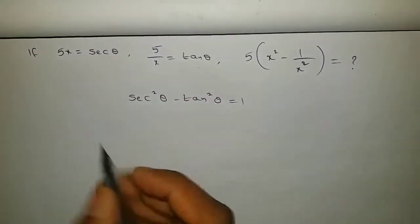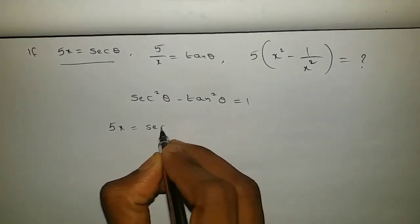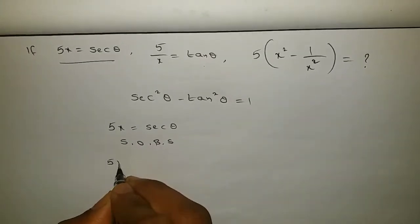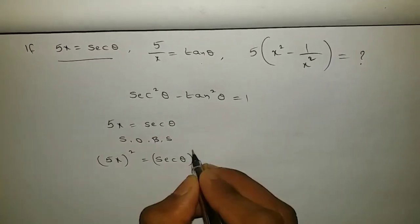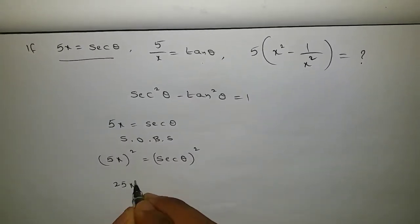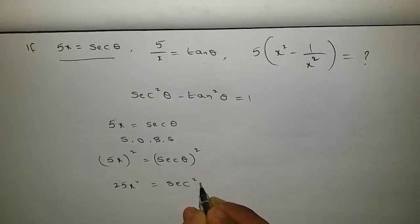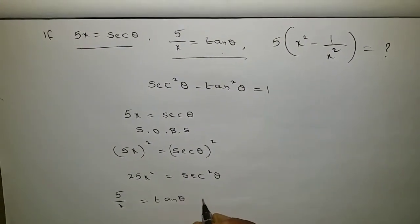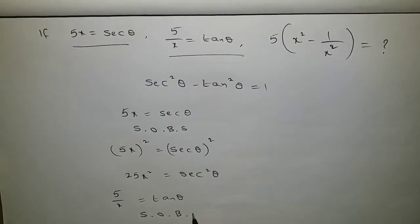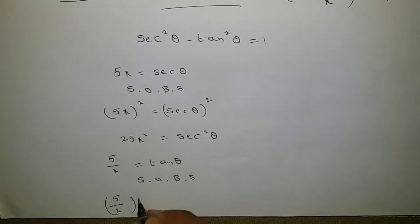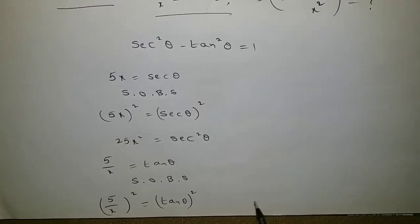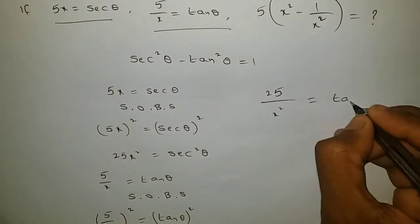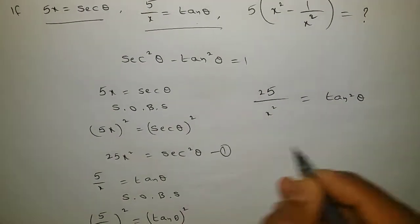So it means for the given two values we need to do squaring on both sides. Let us take the first one: f(x) equals secant theta, so squaring on both sides, f(x) whole square, that is f squared times x squared, equals secant squared theta. Next, f(1/x) equals tan theta — the second one. Again squaring on both sides: f(1/x) whole square, that is f squared by x squared, equals tan squared theta.